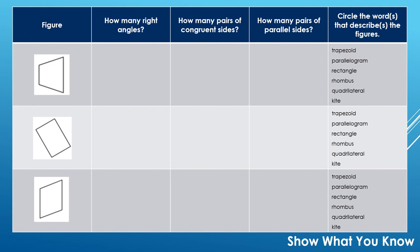It's time to show us what you know. Talk to your teacher how they want you to submit your work. All these problems are located in your Schoology course. There are six figures. We want you to identify how many right angles are in each figure, how many pairs of congruent sides there are in each figure, how many pairs of parallel sides, and circle the word or words that describe the figures. Remember that hierarchy of the quadrilaterals.